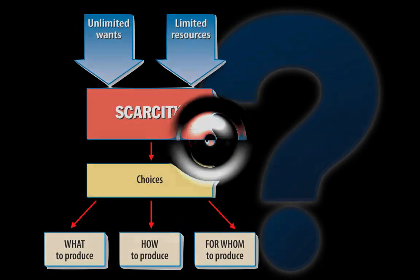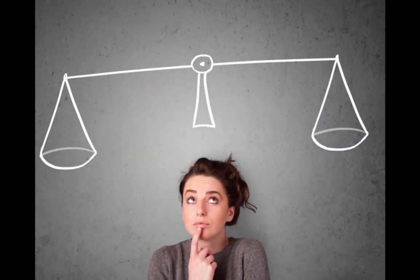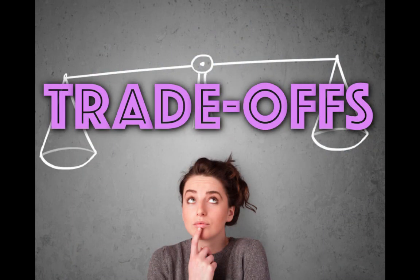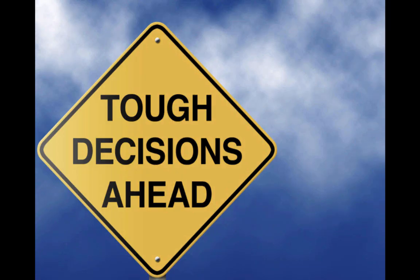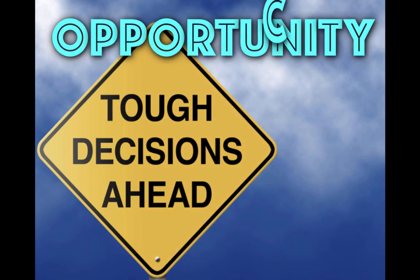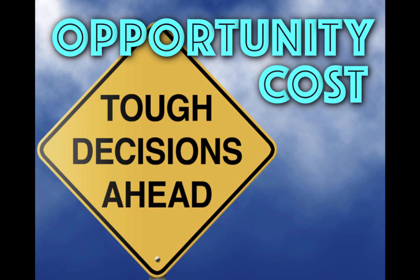Which brings us to our next economic law: every economic decision involves trade-offs. Trade-offs are each of the alternative options given up when making a decision — in other words, what did you give up when you made your choice? Every decision involves multiple trade-offs, but each economic decision only has one opportunity cost.